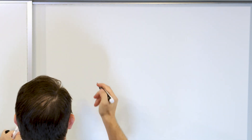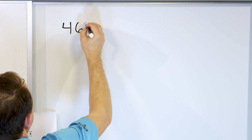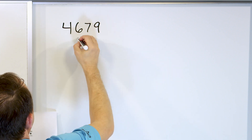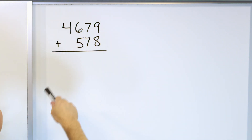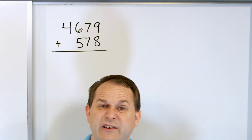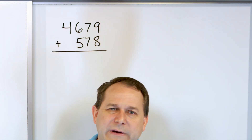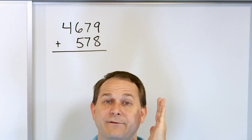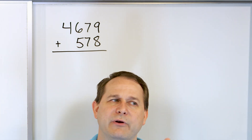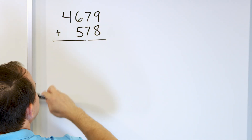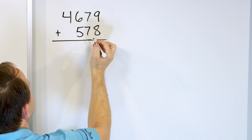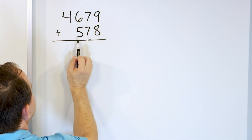We're going to pick up the pace just a little bit so we can get some practice. 4,679 plus 578. These numbers have a different number of digits — one has four digits, one has three. We cannot round them to different positions; we pick the highest column that both numbers have. Both numbers have a third column, so we round to the hundreds place. This is ones, tens, hundreds — we round here.